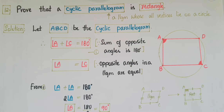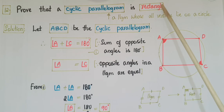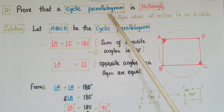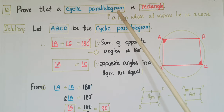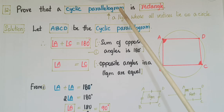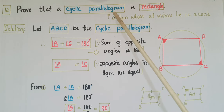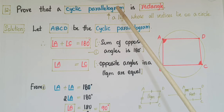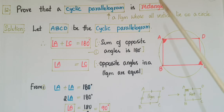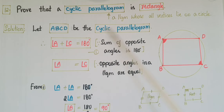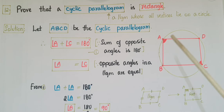This is the 12th problem: Prove that a cyclic parallelogram is a rectangle. We know that a parallelogram is a quadrilateral in which opposite sides are parallel and equal. A cyclic parallelogram means a parallelogram whose vertices lie on a circle. Let ABCD be a cyclic parallelogram.